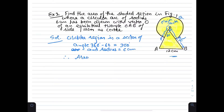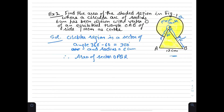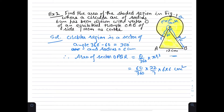Area of sector OPQR equals theta/360 × πR². This equals 60/360 × 22/7 × 6 × 6 cm² = 660/7 cm², or 94.3 cm². This is our equation number 1.